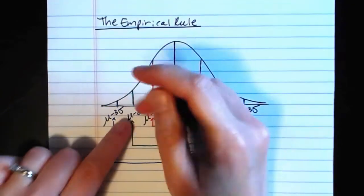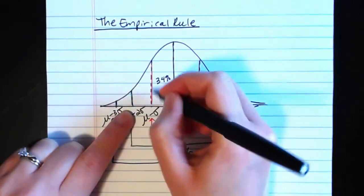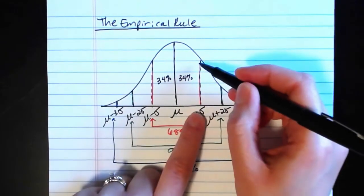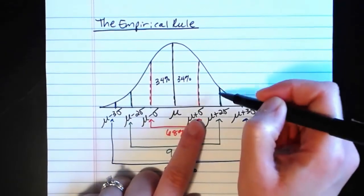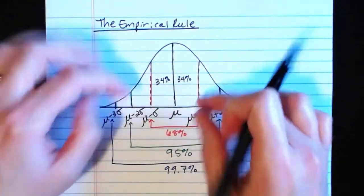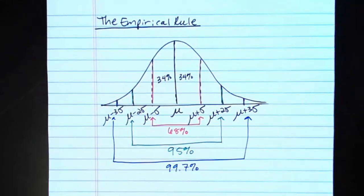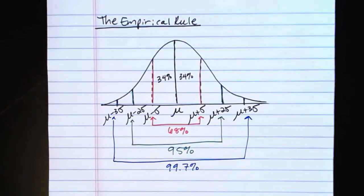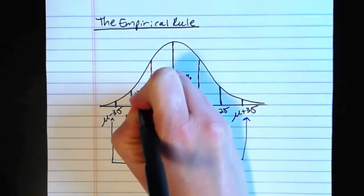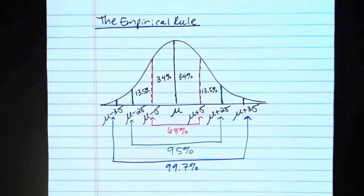To find out how much is between two standard deviations below the mean and one standard deviation below the mean — or similarly, between one standard deviation above and two standard deviations above — we first find the difference between 95% and 68%. Taking 95 minus 68 gives us 27%, which is split evenly on both sides: so 13.5% in each of those segments.